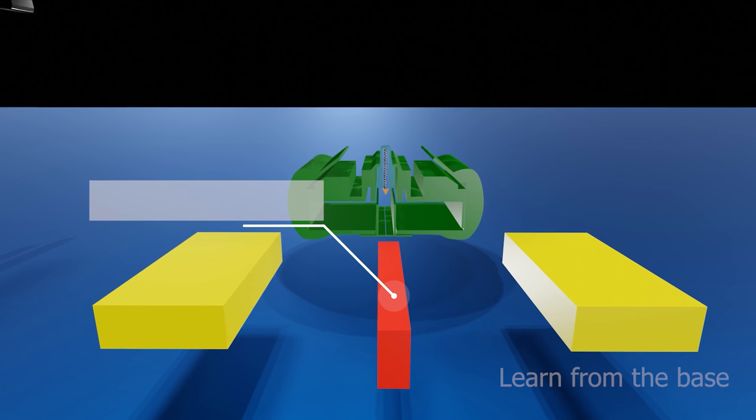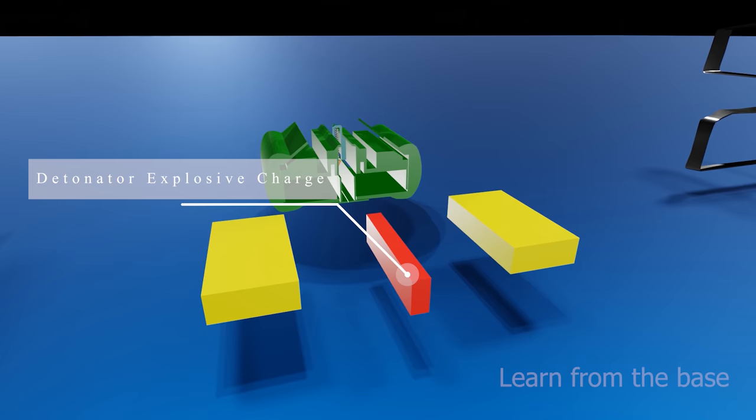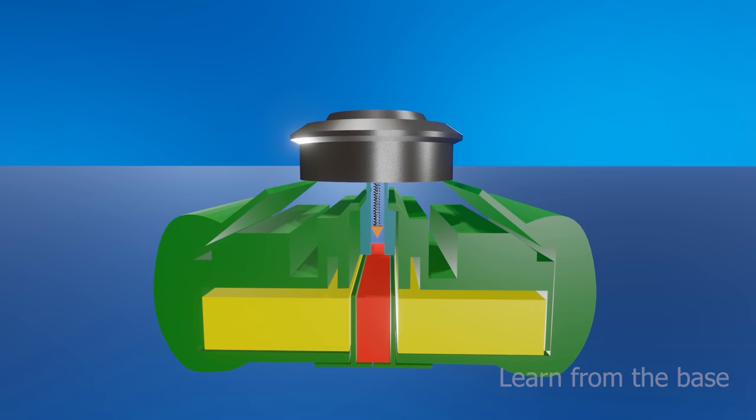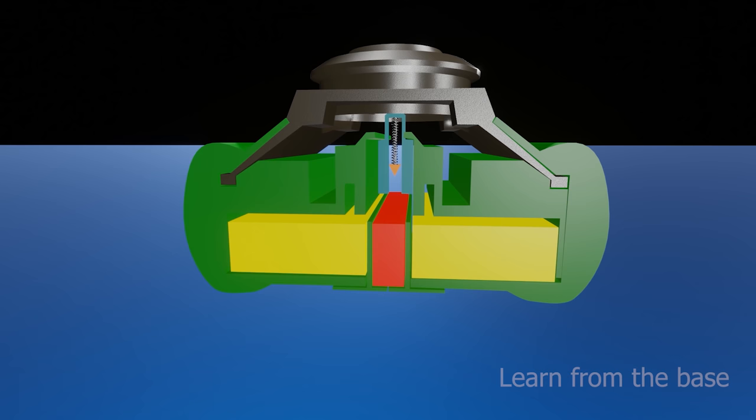And this is the detonator explosive charge. The booster charge is a highly sensitive explosive that will activate easily when subjected to the shock of the detonator. The purpose of the booster is to amplify the shock of the detonator and initiate the main explosive charge.